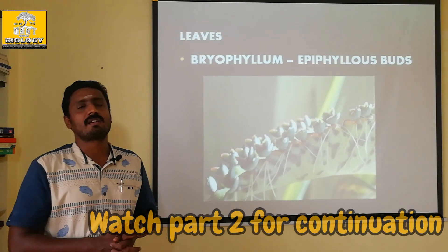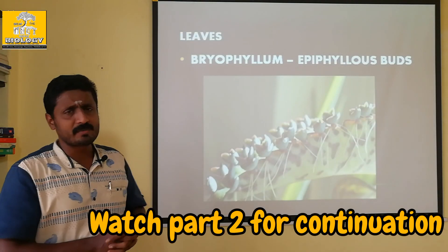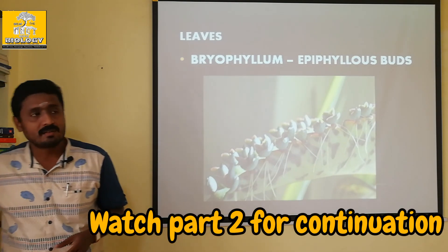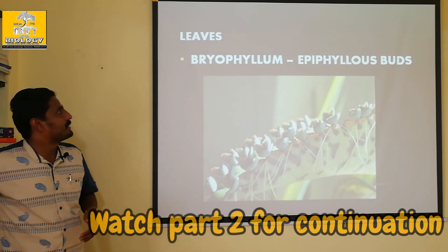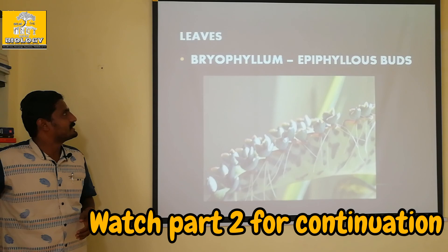The leaf propagates new plants. This is where there are other types of reproductive methods in vegetative propagation.